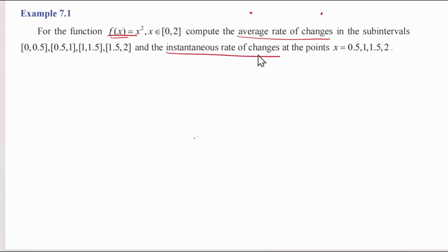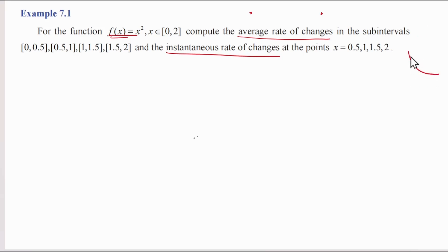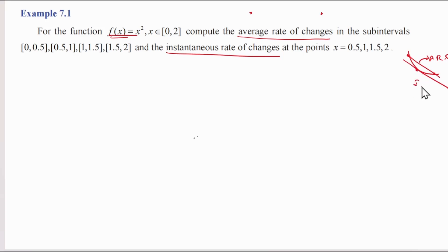Now, instantaneous rate of change. Instantaneous rate of change is at one particular point — we say the slope at that point is the instantaneous rate of change. If we use two points, we say the slope between them is the average rate of change. So: one point gives instantaneous rate of change, two points give average rate of change.